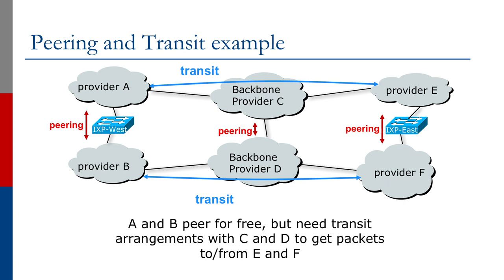Let's have a look at a diagram to illustrate these concepts. At the top half of the diagram in the middle there's a large backbone provider C, which is selling transit to smaller ISPs A and E in different regions. On the bottom half of the diagram, the large backbone provider D is selling transit to smaller ISPs B and F. Thinking about things from the point of view of provider A: provider A sells transit to its own customers. In order to provide this service, A in turn buys transit from C — that is, C agrees to carry A's traffic to the rest of the internet in exchange for money.